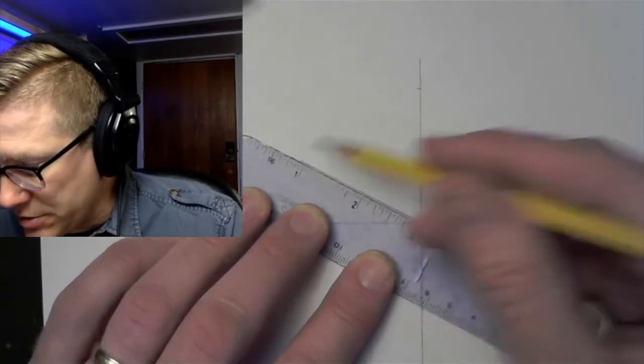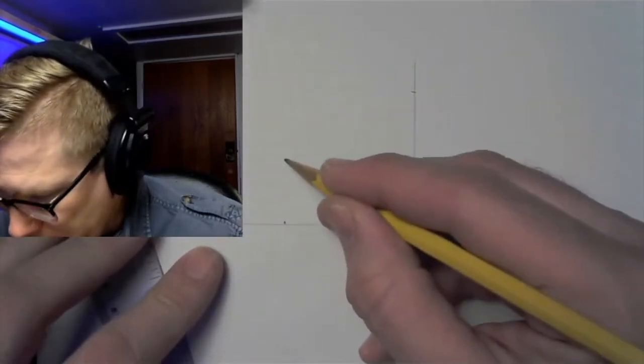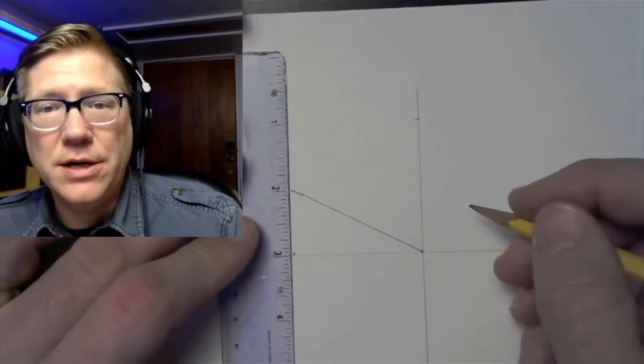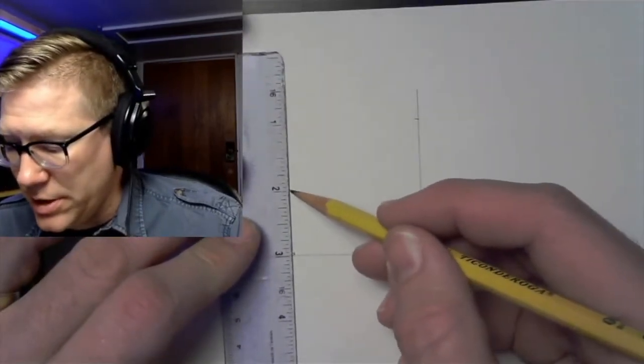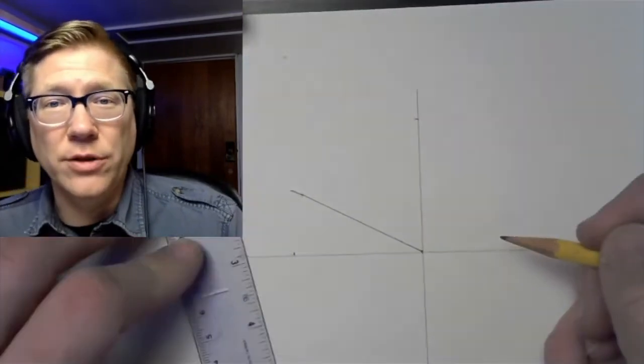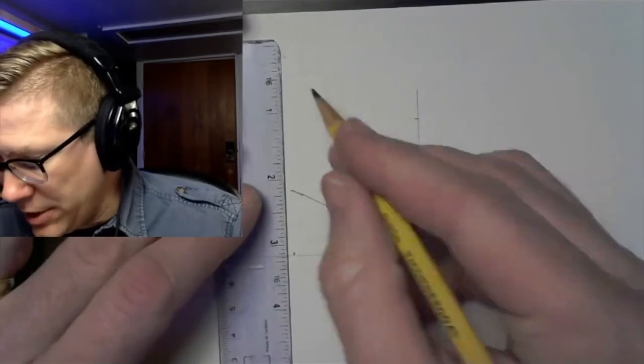So I'm going to draw a line that goes across there and I can connect that a little bit better. Now I'm going to take my ruler, I'm going to go up here, I'm going to set it so that the two inch mark is at the end of my line and make another mark at the zero point on the ruler and I'm going to connect those lines right there.